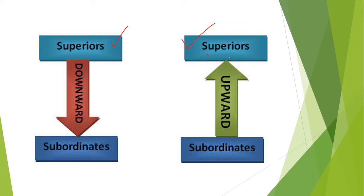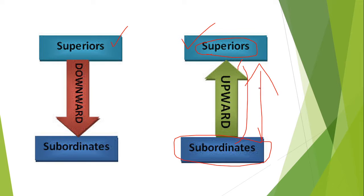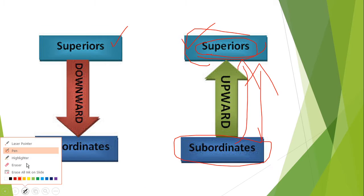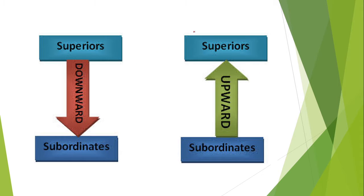In upward communication, the superior is at the top and the subordinate is below — upward means the information goes up from subordinate to superior. Please draw this diagram in your book so it will be clearer to you. In the next video I will discuss a comparison chart of downward and upward communication, and after that we will start with horizontal communication. If you have any doubts, please let me know in the comment section, and please share all my videos with your friends.